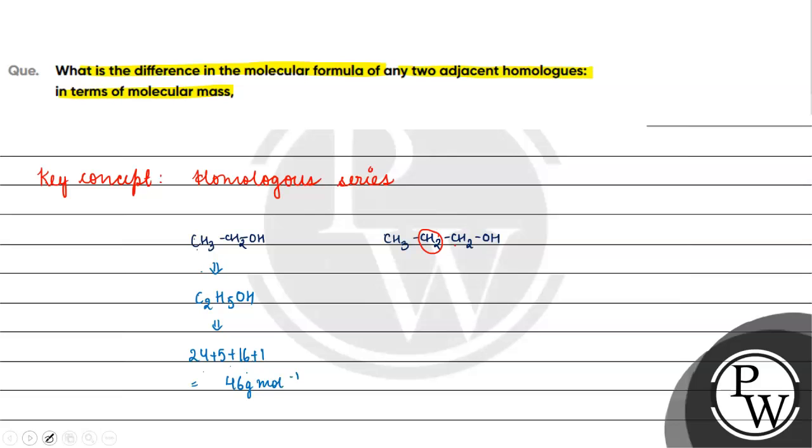If we talk about propanol, what will happen? We will have C3H7OH. What will happen? 36 plus 7 plus 16 plus 1 equals 43, 44 plus 16, which is basically 60, right?